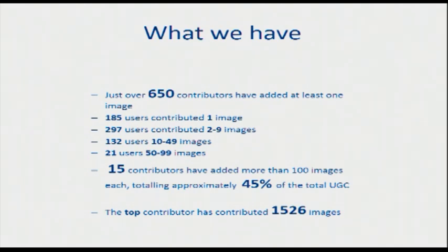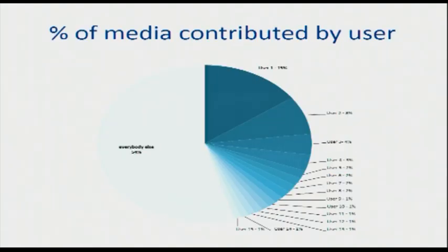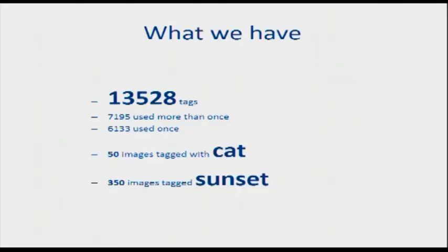The main contributor has added 1,500 images — that's the big blue wedge. This tells you nothing about the quality or the relevancy of the content, but it is a way of breaking it down into logical chunks so we can start looking at what's there. There are 13,500 tags across all of the content, including the stuff that Te Papa has contributed.